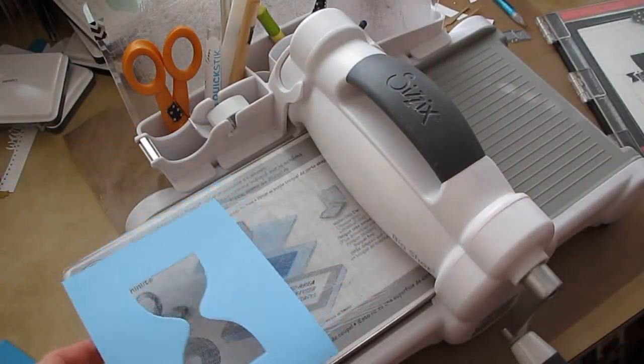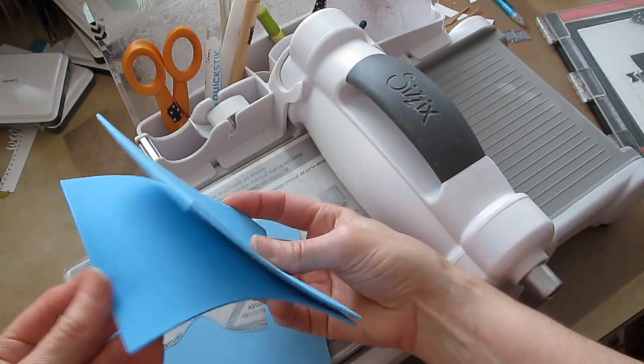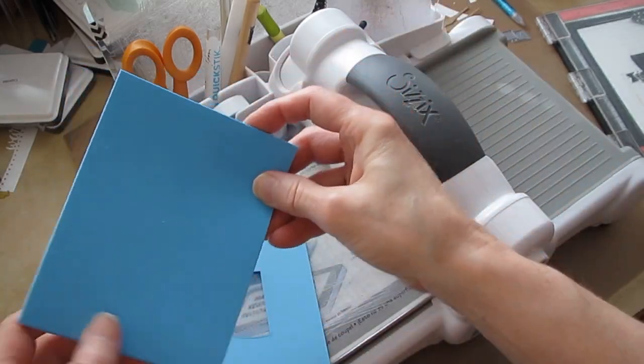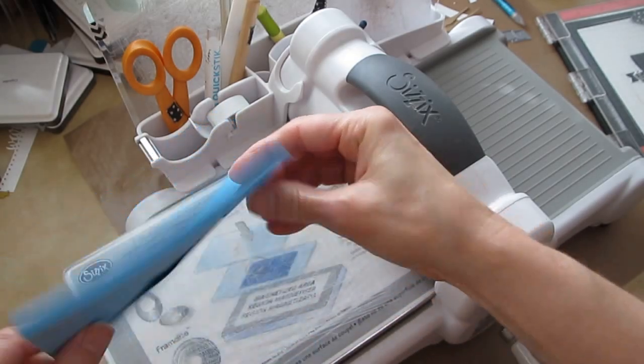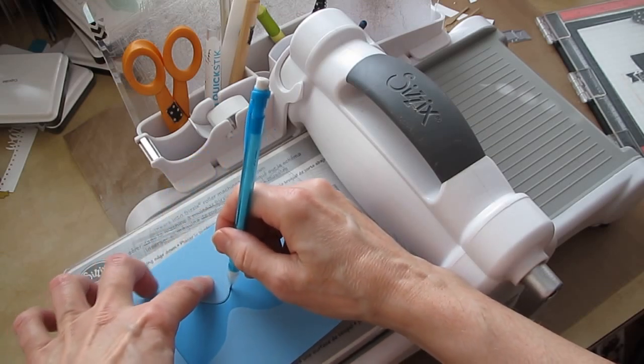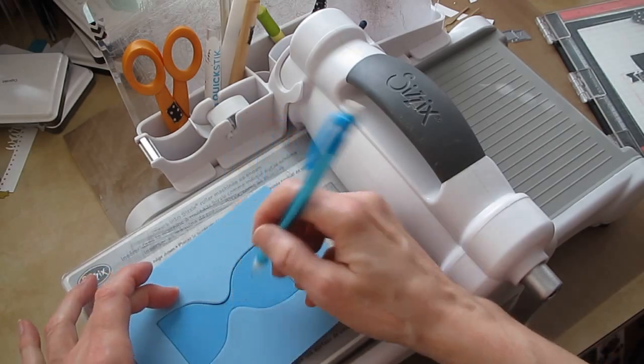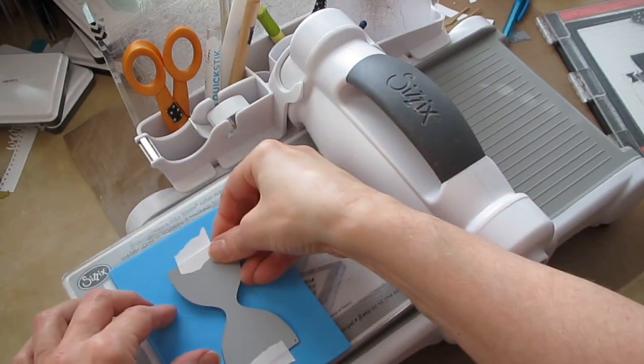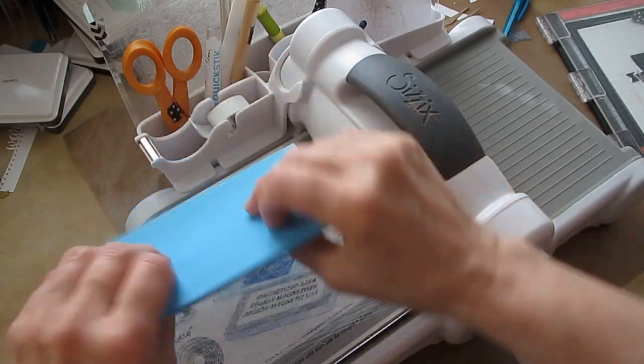Now I need to cut this shape in the foam. I have two layers of that craft foam here that I cut 4 by 5¼. I'll lay that on there and trace in here so I know where to put the die to cut the foam.